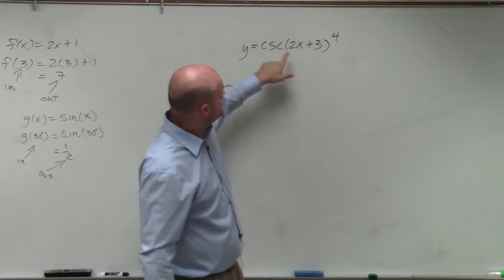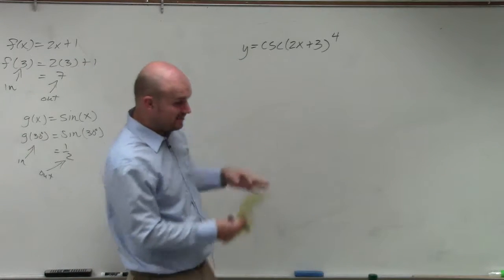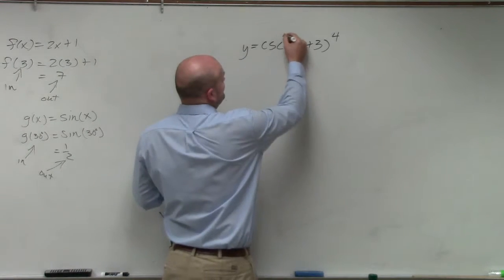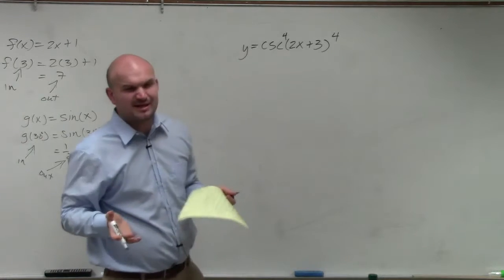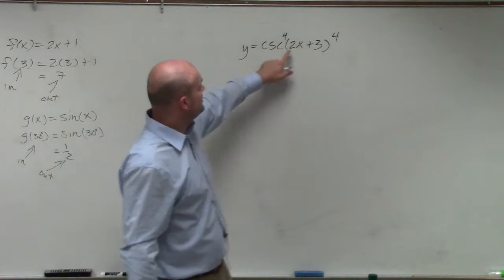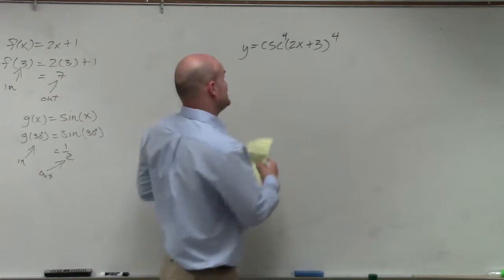But in this case, remember, if this was the cosecant raised to the fourth, which for some reason I was mistakenly going through, we'd usually write that right up in the fourth. So this is just 2x plus 3 raised to the fourth.